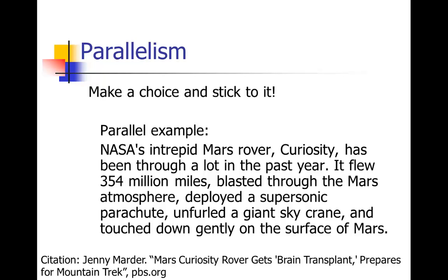'NASA's intrepid Mars Rover Curiosity has been through a lot in the past year. It flew 354 million miles, blasted through the Mars atmosphere, deployed a supersonic parachute, unfurled a giant sky crane, and touched down gently on the surface of Mars.' Notice that in that second sentence it's got a list of things, but they're all parallel — they all follow the same structure: subject-verb, subject-verb, subject-verb. It flew, blasted, deployed, unfurled, touched down gently.